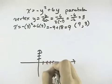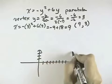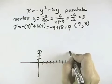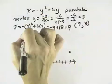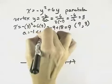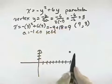y will be 3, x is going to be 9, and that's our vertex. We can see a is equal to negative 1, and that's less than 0, so that means our parabola will open to the left.